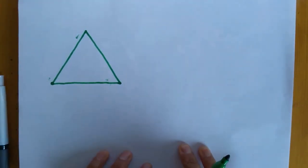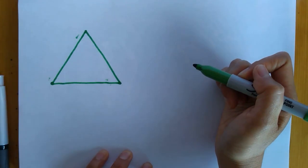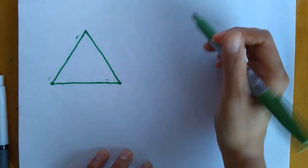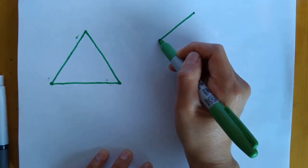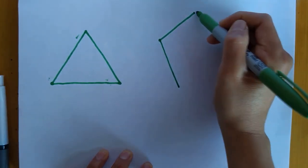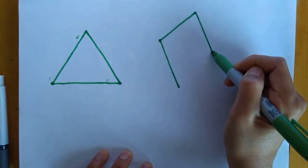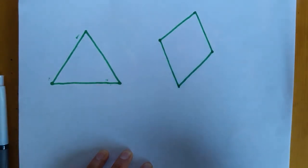And for a diamond, you're gonna need four lines. Let's try. One, two, three, and four. There's a diamond.